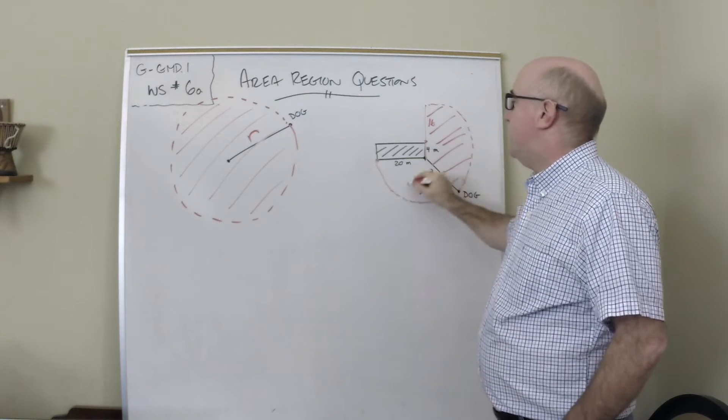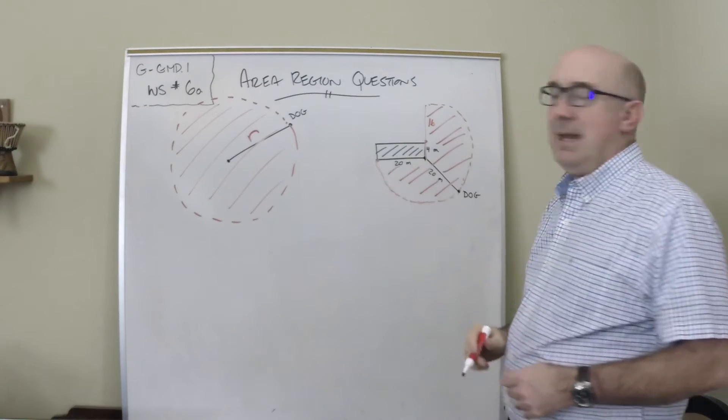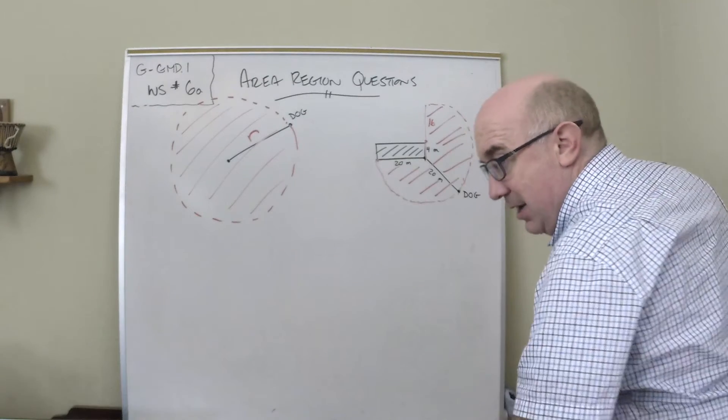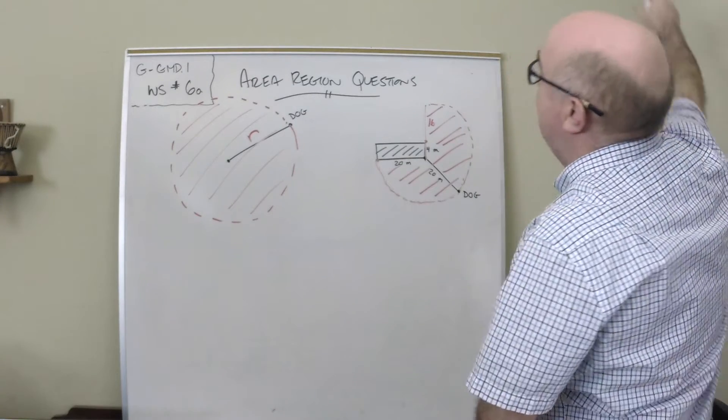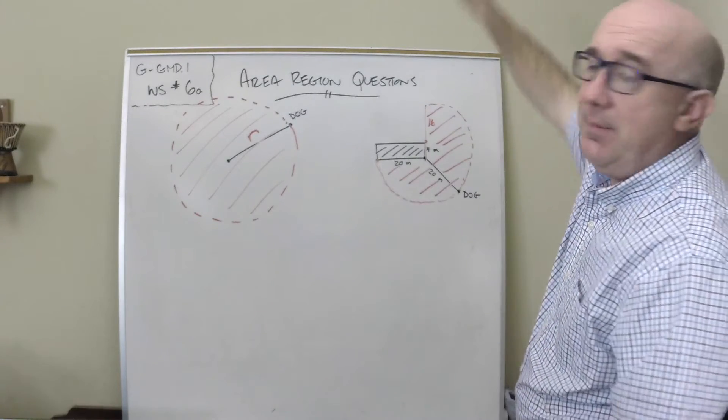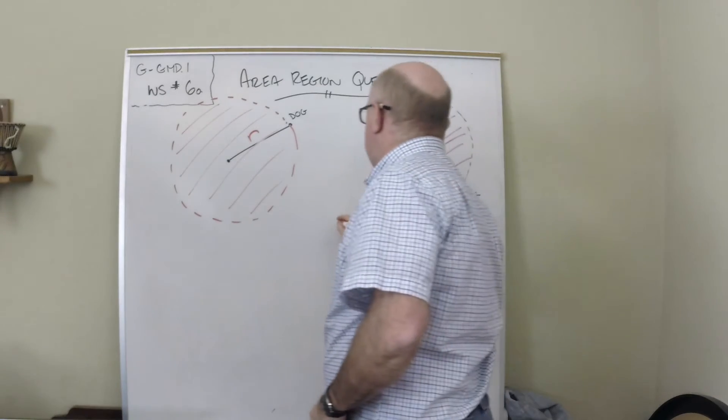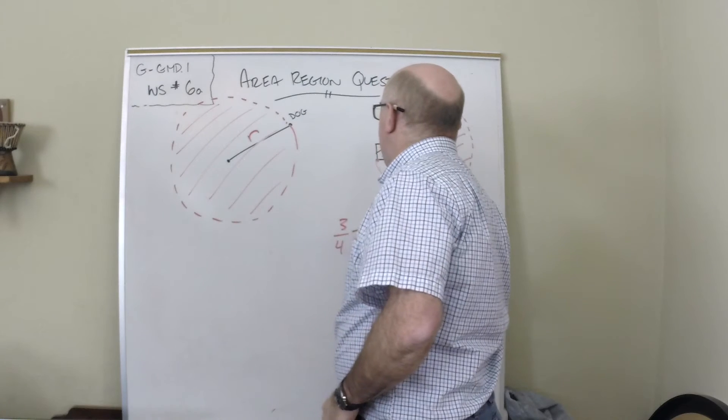The first region I imagine is that the dog can go straight west, all the way south, all the way east, and all the way north from the corner it's been tied on. So the dog can basically cover three-fourths of a circle that has a radius of 20.